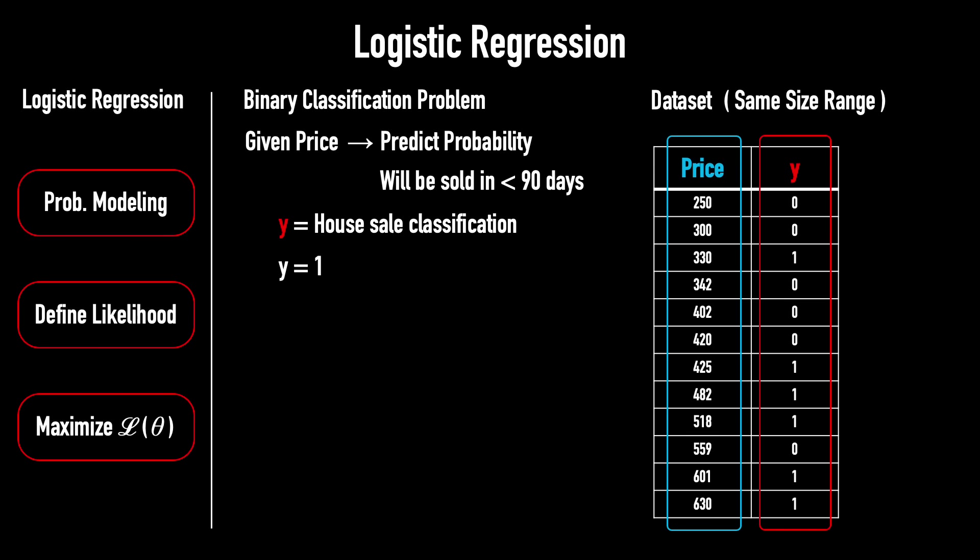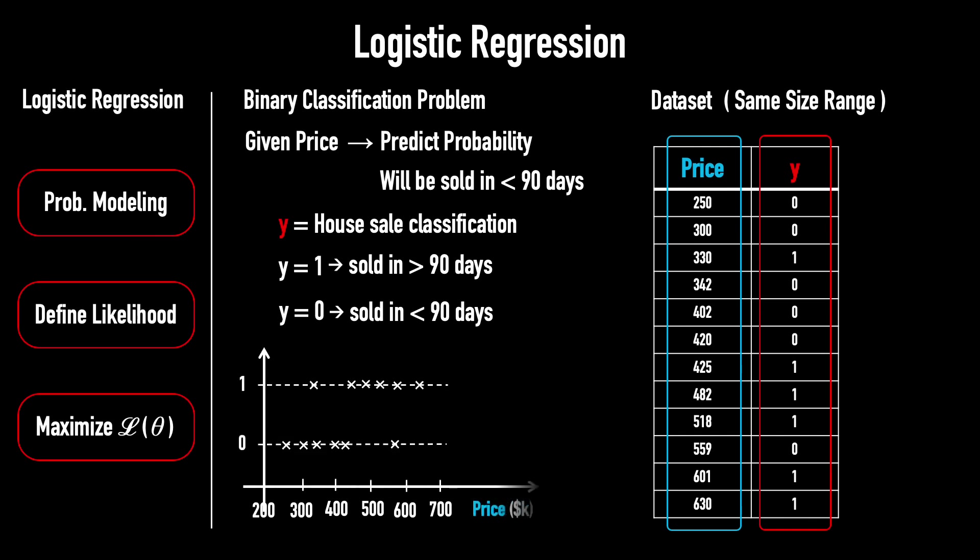Let y represent the sale classification. If y = 1, the house was sold in over 90 days. If y = 0, the house was sold in under 90 days. And here is the diagram. Prices is on the x-axis and sale classification is on the y-axis.